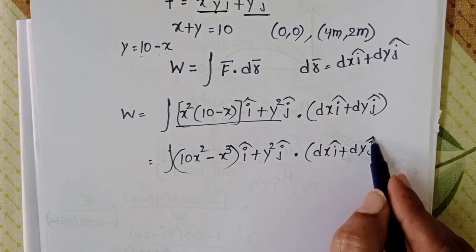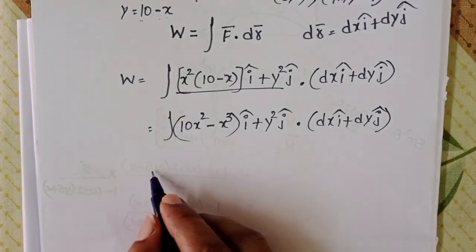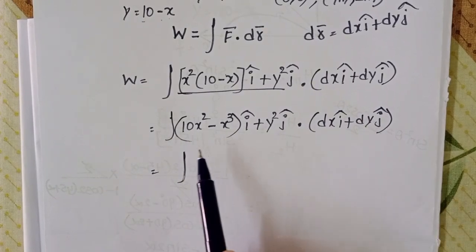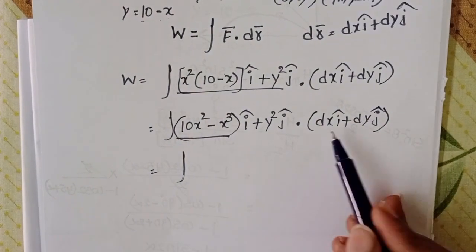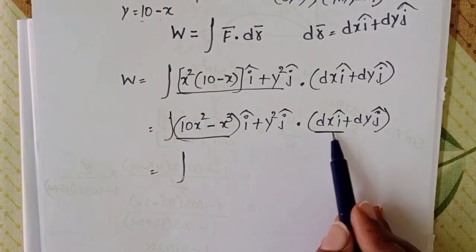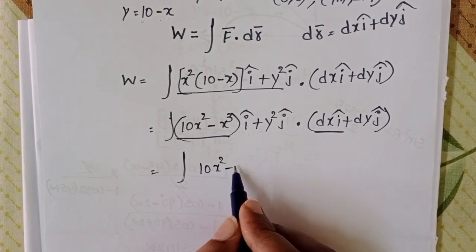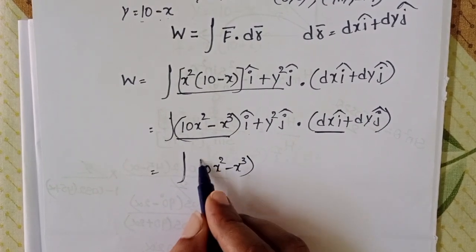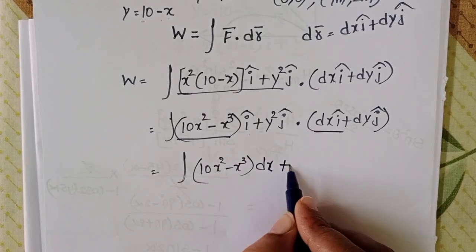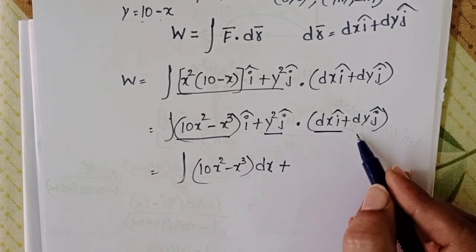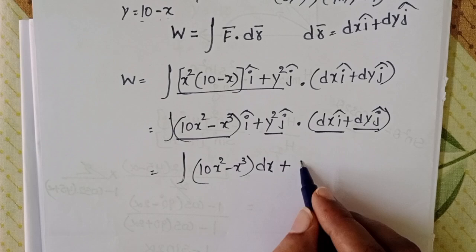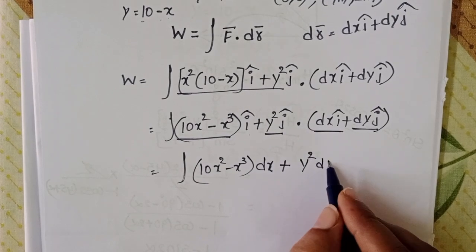Do the dot product. Integral of first term times dx, î·î becomes 1. Then it becomes (10x² - x³) dx plus y² ĵ into dy ĵ, which becomes y² dy.